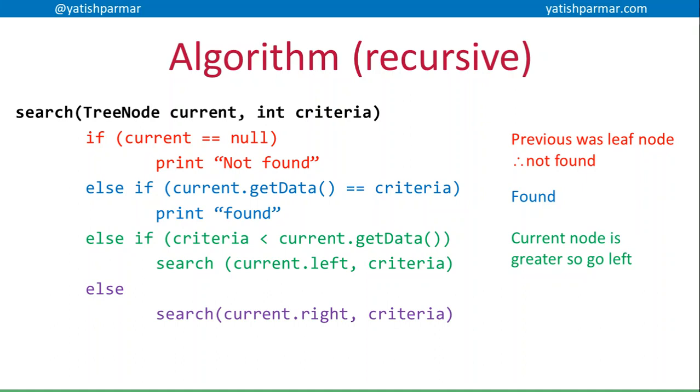And if the criteria is larger than the current node, this is my last possible case, I've just got an else, I'm going to have my recursive call to go right.